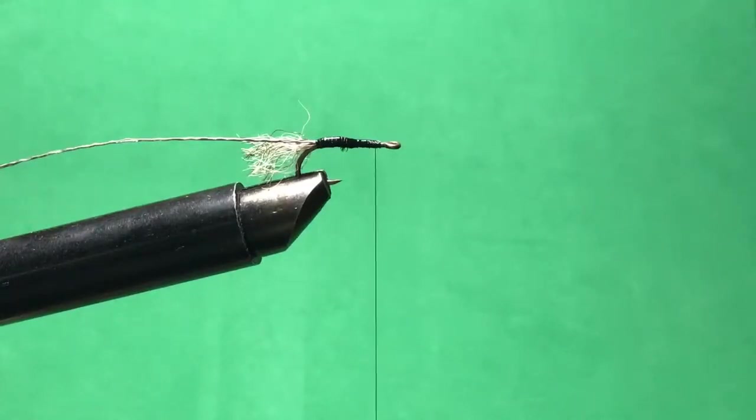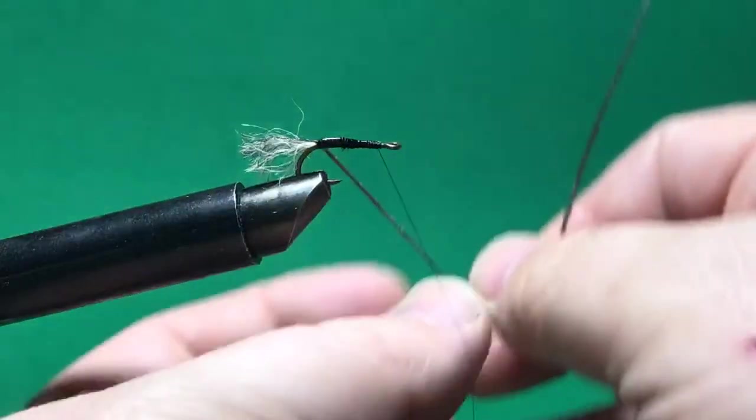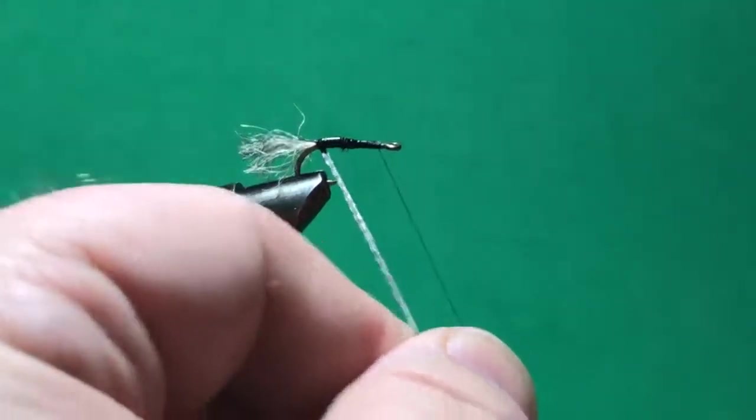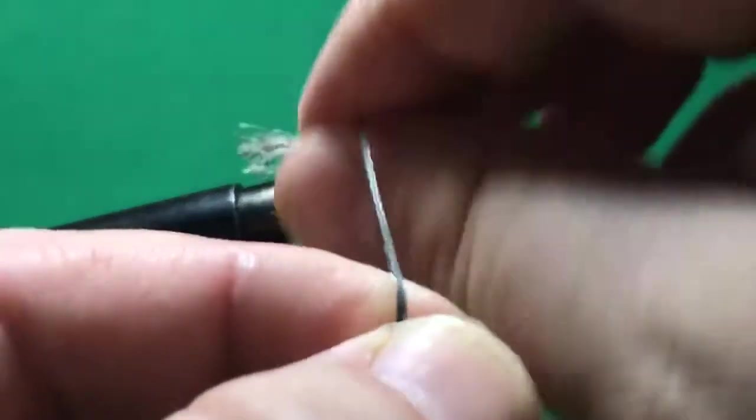It's funny when you collect random materials that you find to tie flies with, they end up everywhere. And you have a room full of junk that you can tie with. So I'm just going to wrap this forward. Make it tight good touching turns.